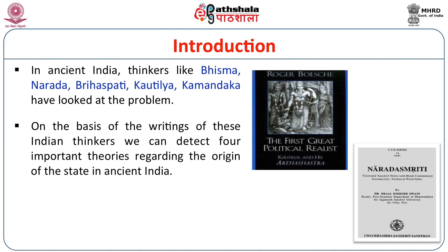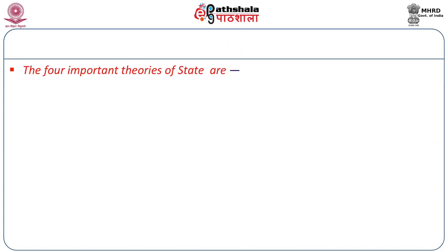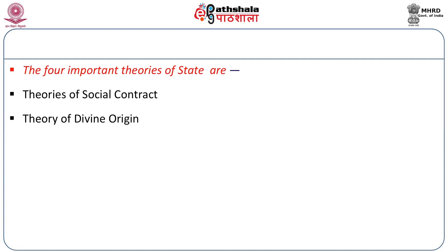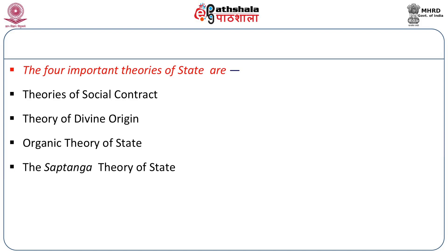On the basis of the writings of these Indian thinkers, we can detect four important theories regarding the origin of the state in ancient India. The four important theories of state are theories of social contract, theory of divine origin, organic theory of state and the Saptanga theory of state.